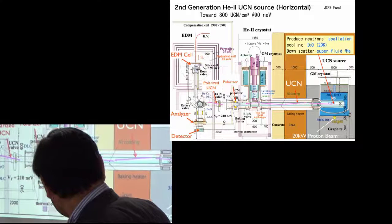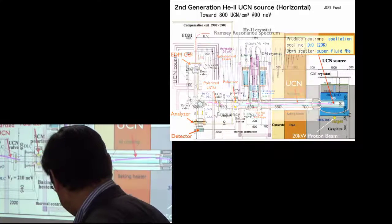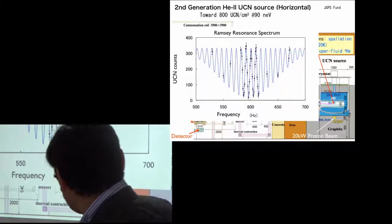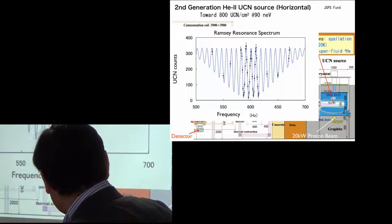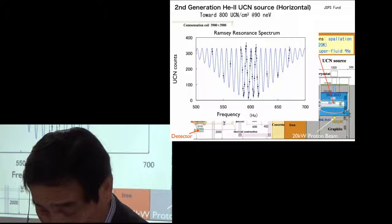And the UCN is polarized by the very strong magnetic field. Then we get this kind of Ramsey resonance and to get very precise resonance frequency.